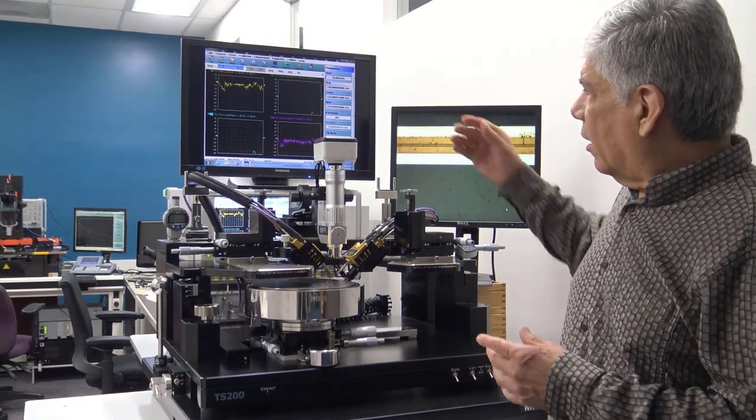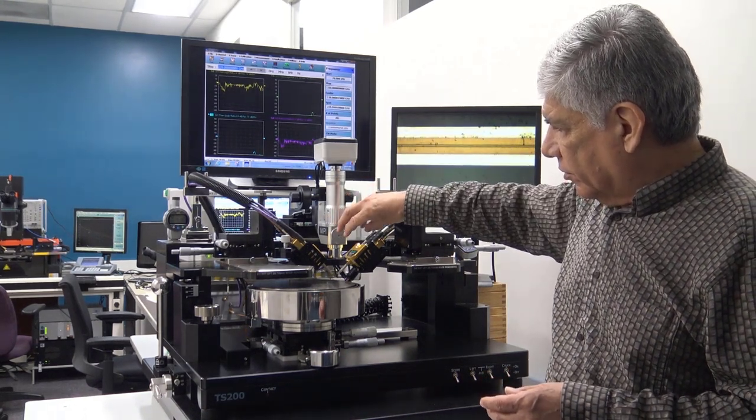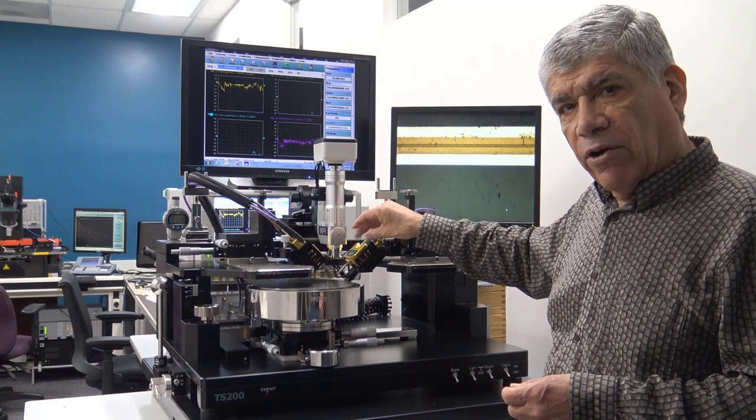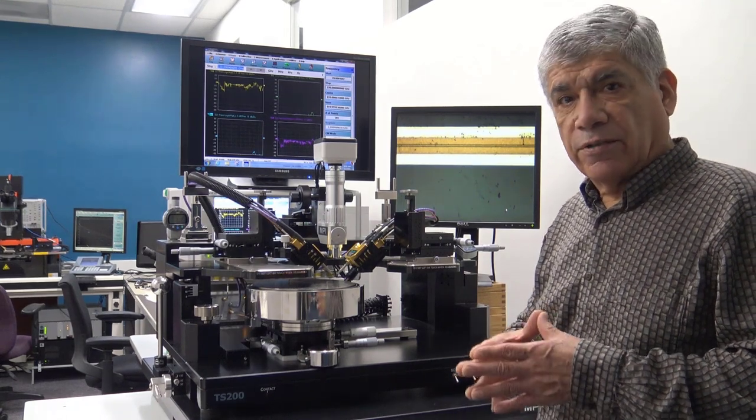A typical application for this system is on-wafer measurements, and therefore what we'll be demonstrating is how to perform an on-wafer calibration for this system, all the way up to 220 GHz. The system is comprised of the VNA and the test set and these modules, and what we have mounted for now is the MPI probes, and we'll be using MPI calibration substrates as well.